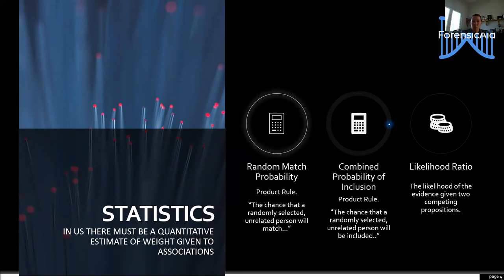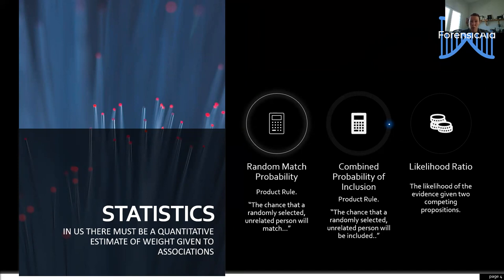For mixed evidence we use the combined probability of inclusion, which also uses the product rule. We take all the alleles we see in the profile and multiply their frequencies in any combination, focused only on the evidence alleles and the chance that anyone could have any combination of those alleles. It is still reported as the chance that a randomly selected unrelated person will be included. The random match probability is primarily used for single source profiles, while the combined probability of inclusion is used for mixture evidence.